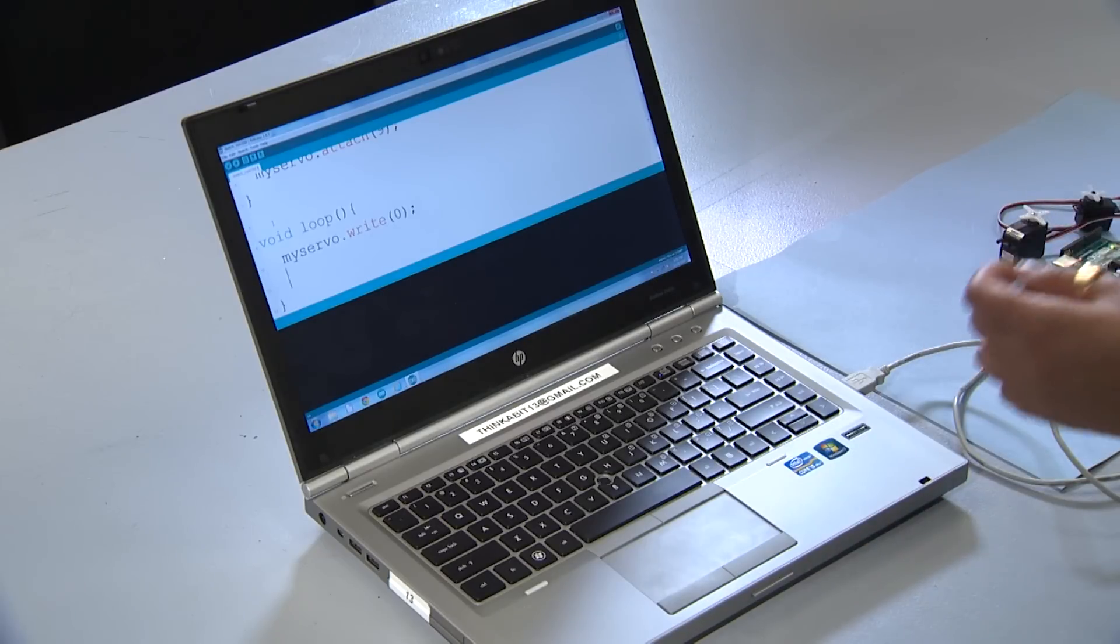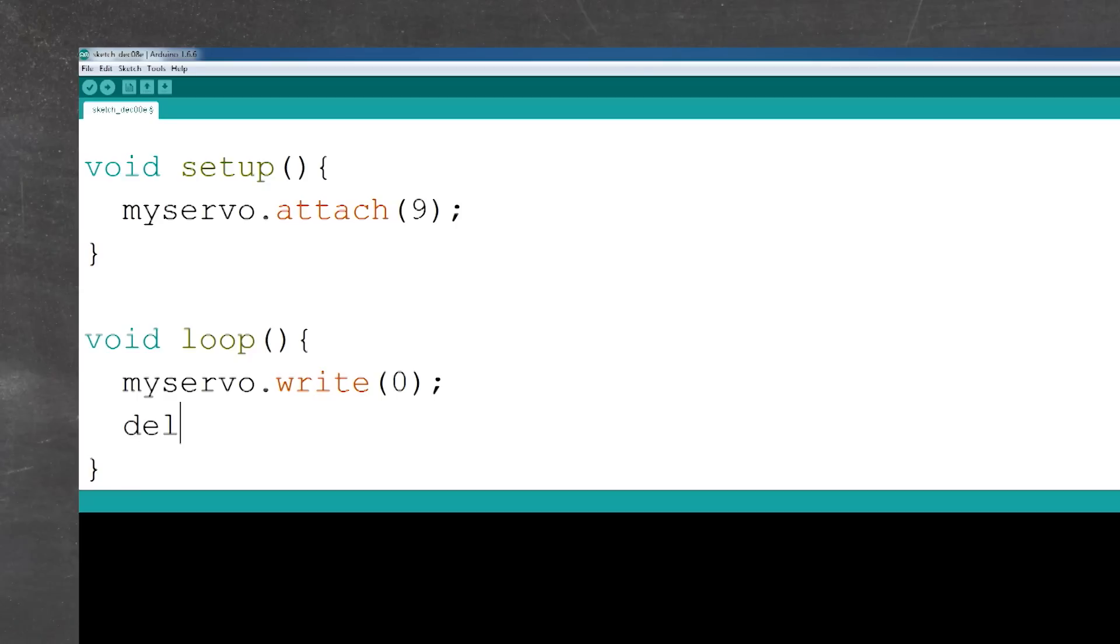We want to remain doing that certain action for a certain amount of time, so our next line will be delay. We're going to use the value 2000 and then semicolon. 2000 milliseconds is 2 seconds.